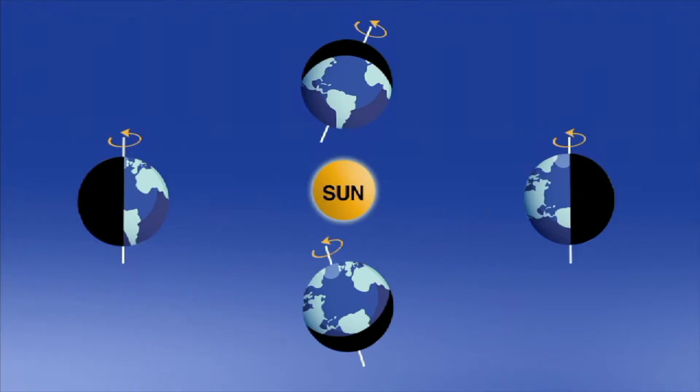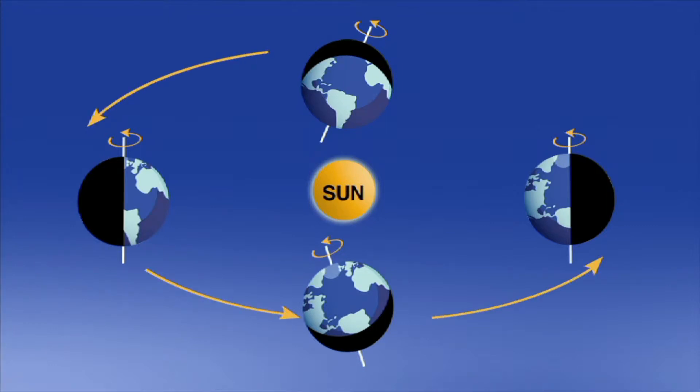The Earth's different seasons are created, in part, by Earth's revolution around the sun.